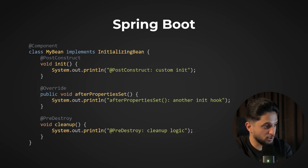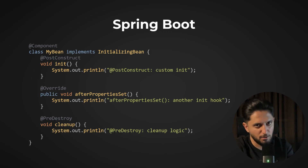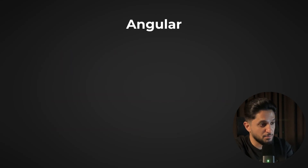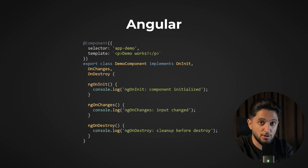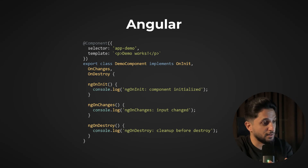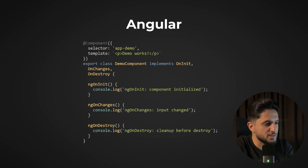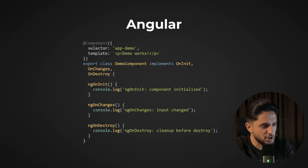Angular component lifecycle hooks are a perfect example of the template method pattern. Angular defines the component lifecycle algorithm — creation, change detection, rendering, and destruction — but provides hooks like ngOnInit, ngOnChanges, and ngOnDestroy where you can add custom behavior. Angular controls when these methods are called and in what order, but you define what happens in each hook. Under the hood, Angular's change detection cycle executes the template method that manages the component lifecycle.